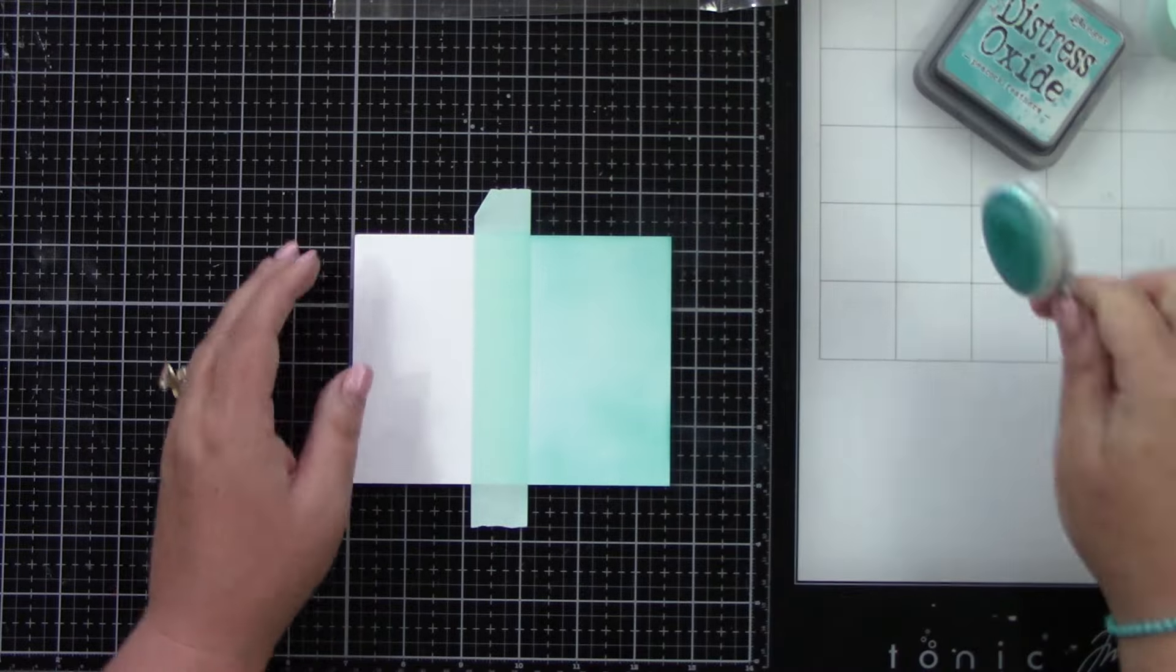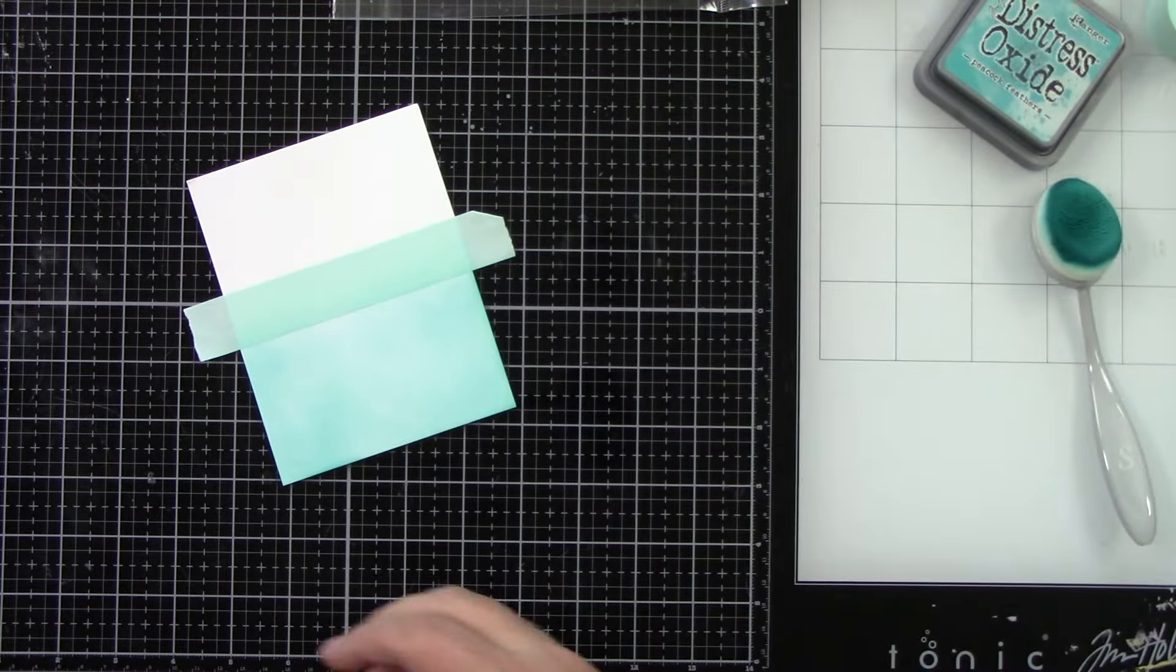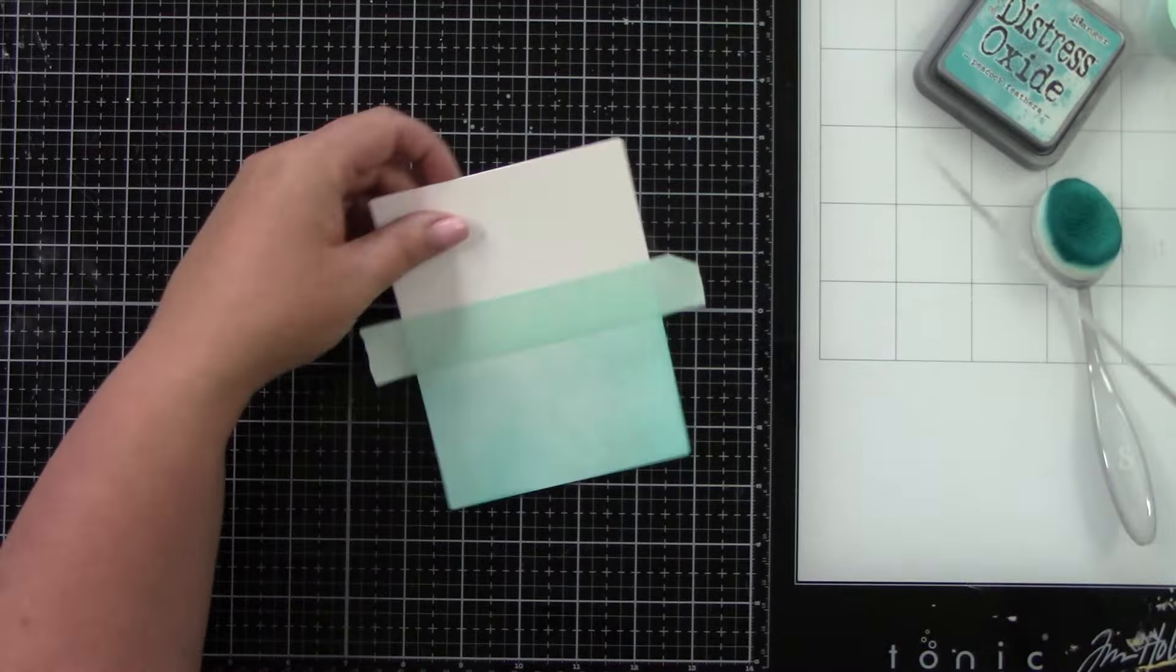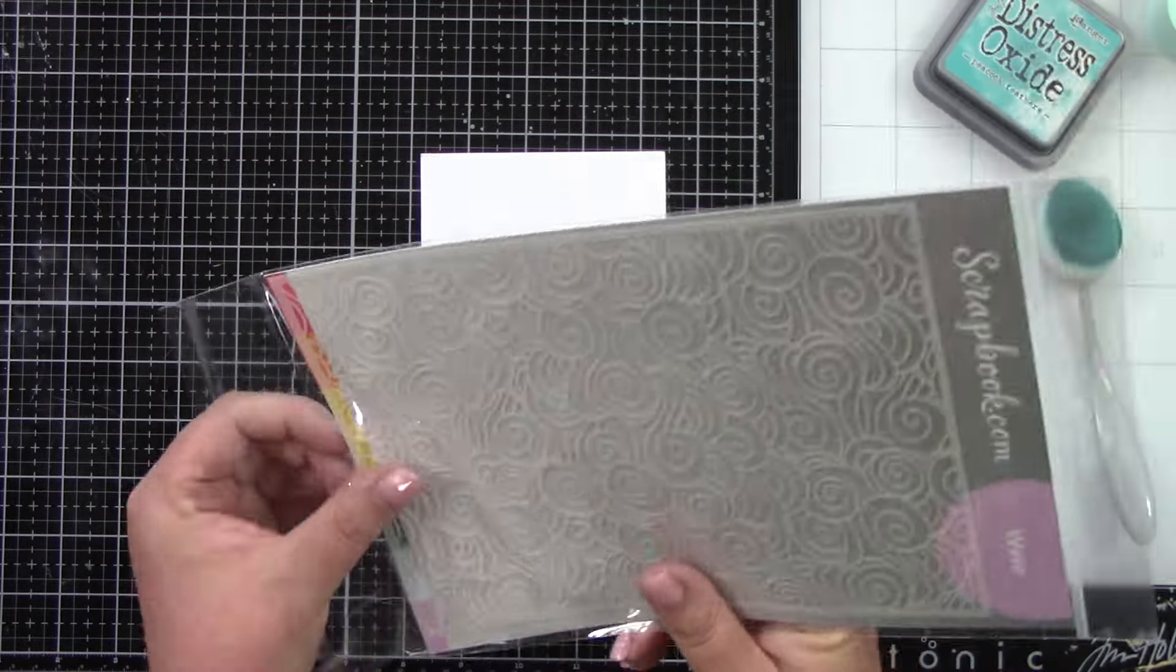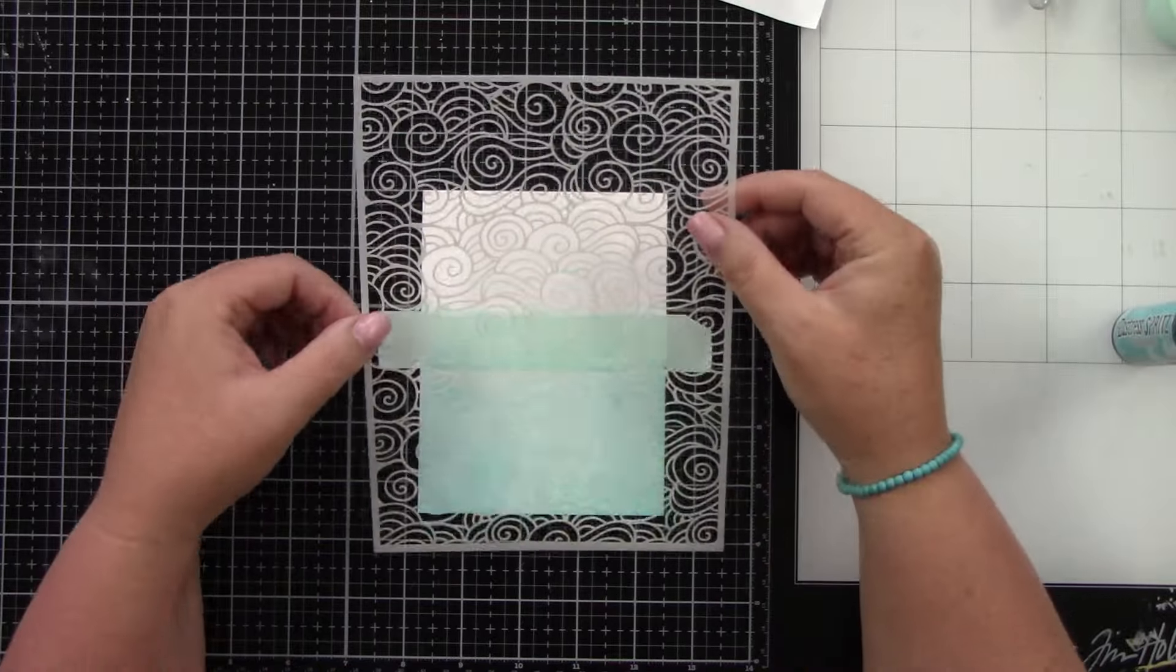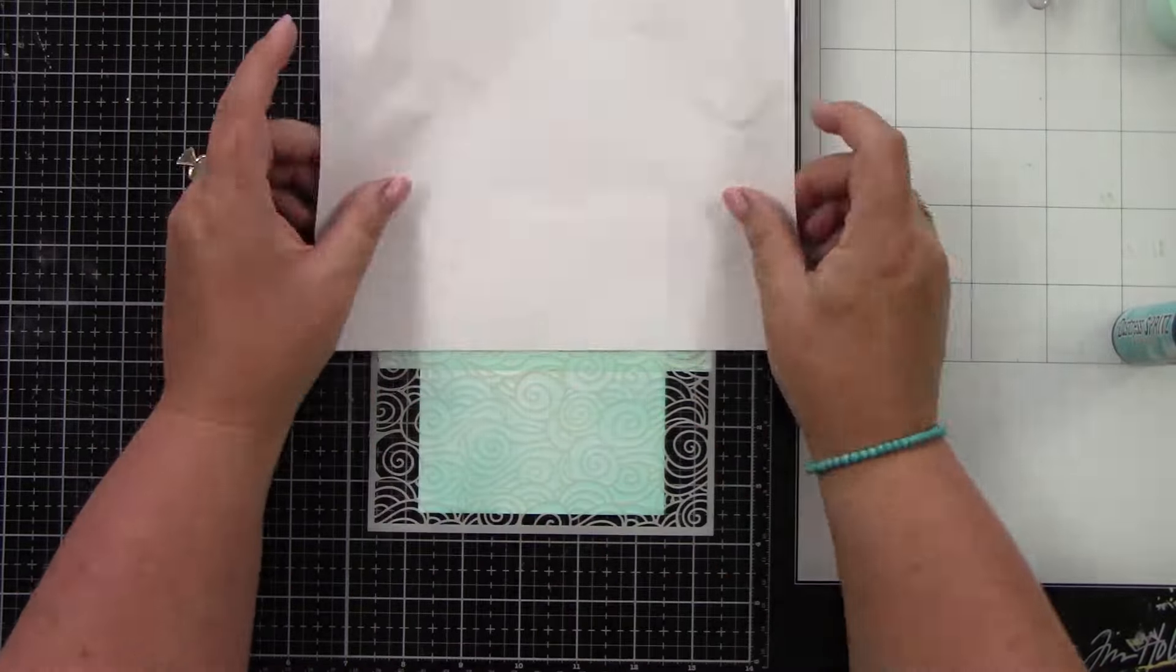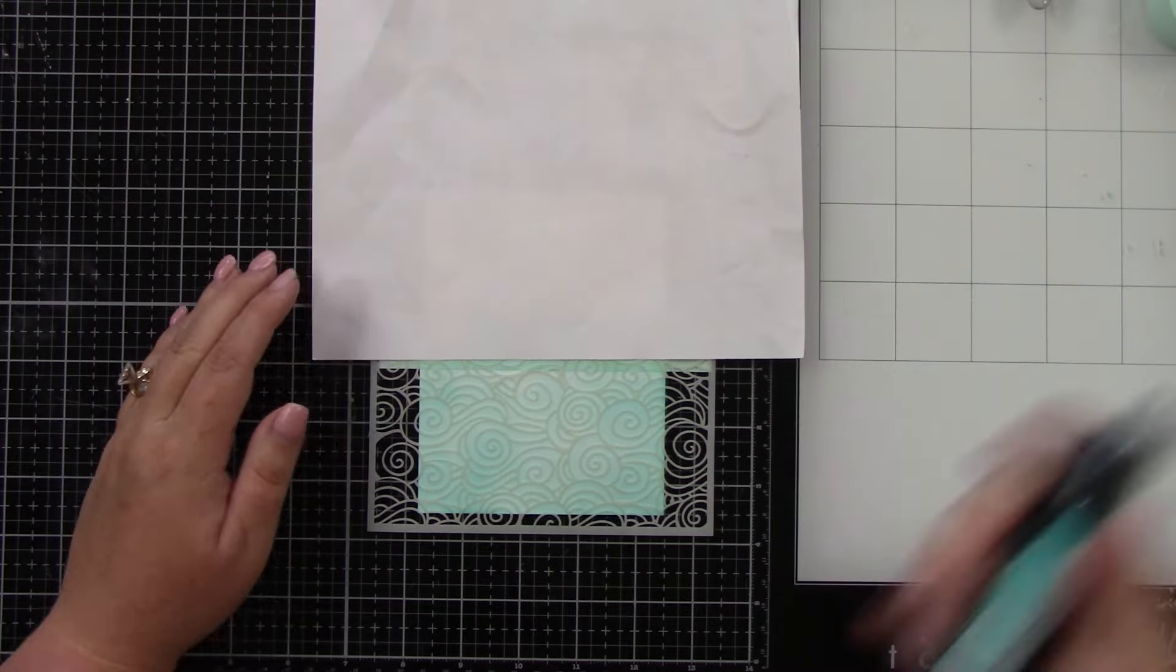So I taped off with some mint tape because I just want the bottom part of my card to have this effect. Now that that's ink blended, I'm going to be using Scrapbook.com's Wave Stencil. I'm going to spray the back of it with Pixi Spray because I want this to stick down because this spray is so liquid. I don't want it to run under the stencil.